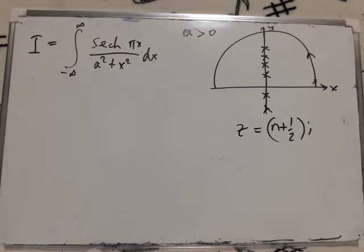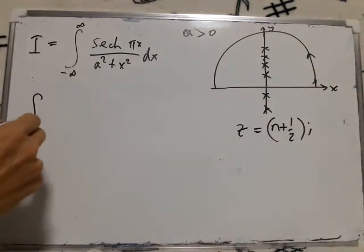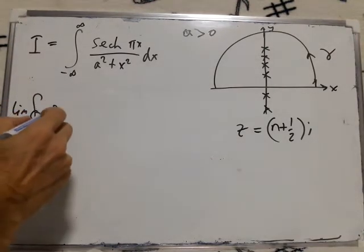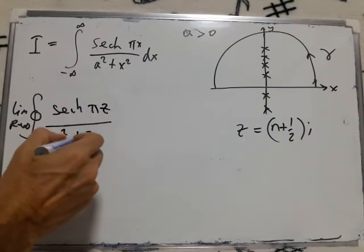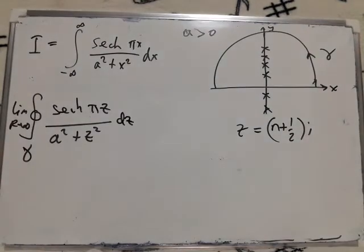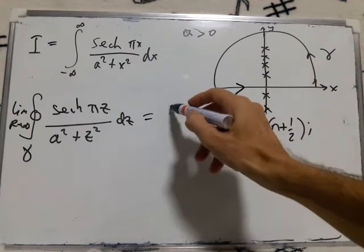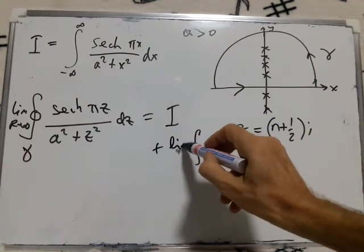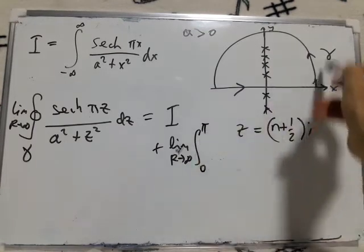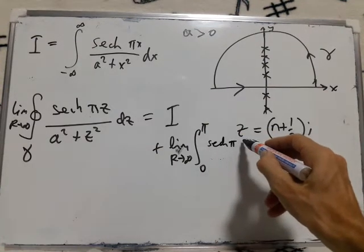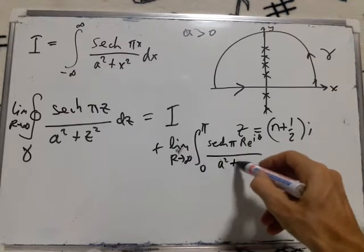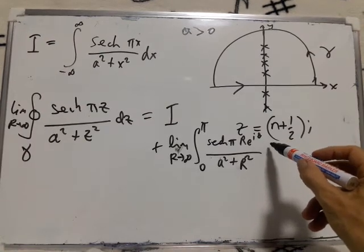So what does that give us? We'll take as usual the limit as r goes to infinity of the contour integral sech πz over a squared plus z squared dz. That's going to give us the integral we want along here as r goes to infinity, plus the integral along this arc of sech π.